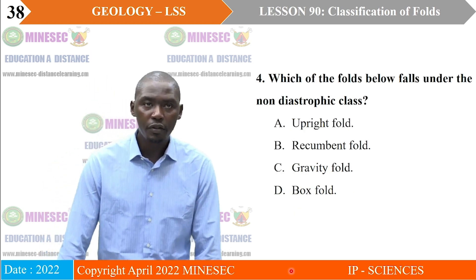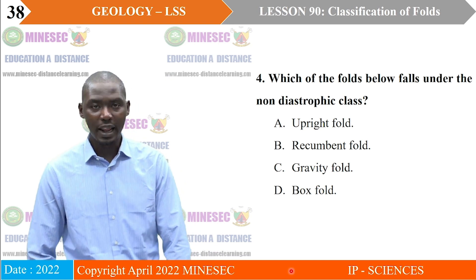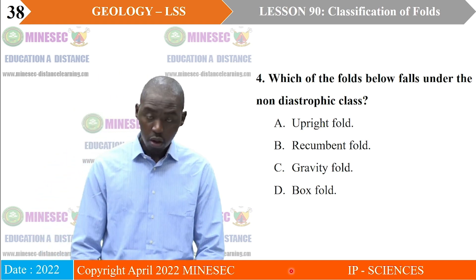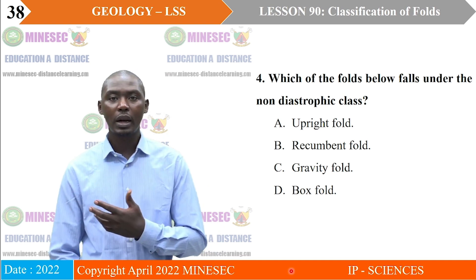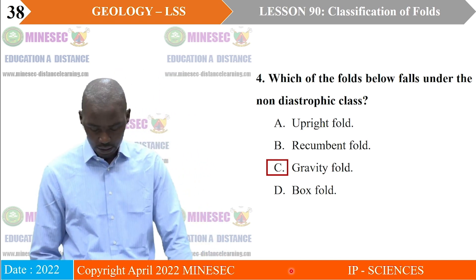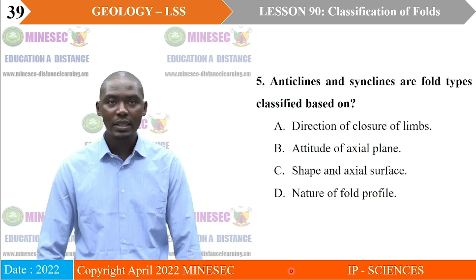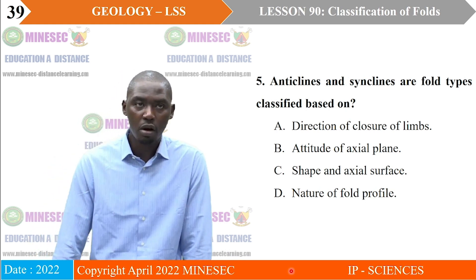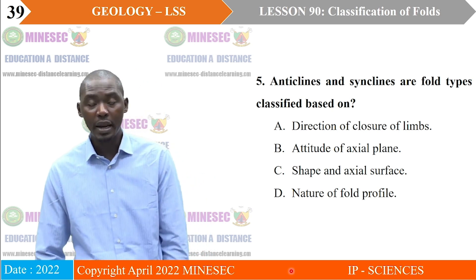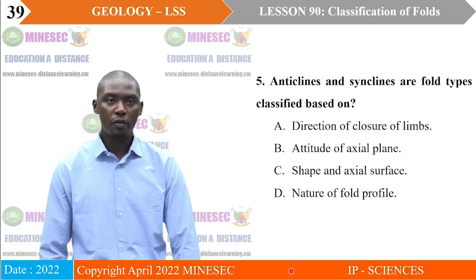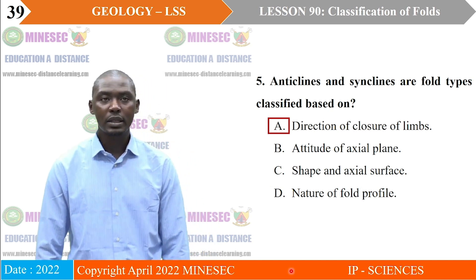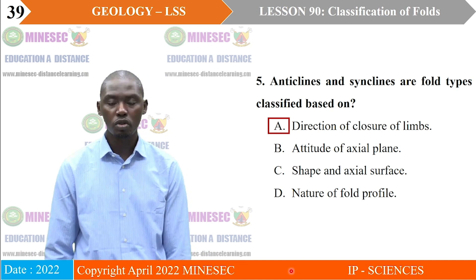Question 4: Which of the folds below falls under the non-diastrophic class? Upright fold, recumbent fold, gravity fold, box fold. The non-diastrophic class is formed under the influence of gravity, so the correct answer is C — gravity fold. Question 5: Anticlines and synclines are fold types classified based on A. direction of closure of limbs, B. attitude of axial plane, C. shape and axis of surface, D. nature of fold profile. The correct answer is A: anticlines, synclines, antiforms, and synforms are defined based on direction of closure of limbs.